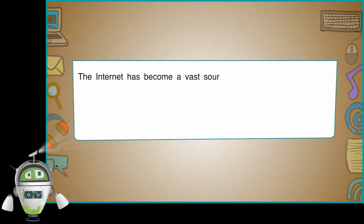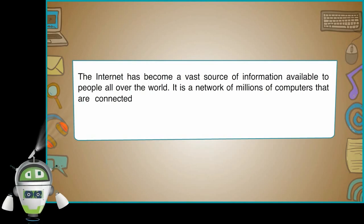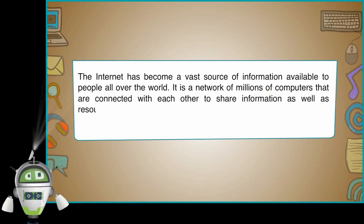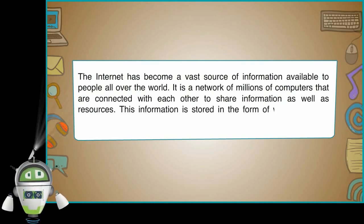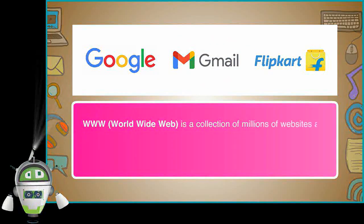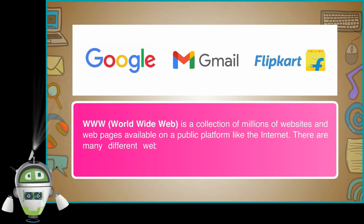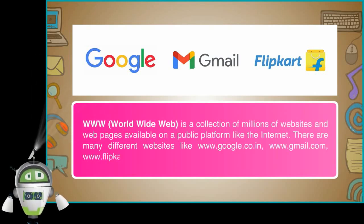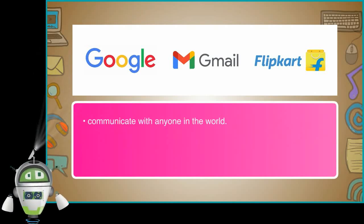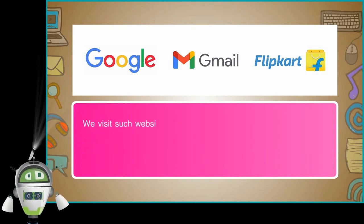The Internet has become a vast source of information available to people all over the world. It is a network of millions of computers that are connected with each other to share information as well as resources. This information is stored in the form of websites which consist of web pages. The World Wide Web is a collection of millions of websites and web pages available on a public platform like the Internet. There are many different websites like www.google.co.in, www.gmail.com, www.flipkart.com, using which we can communicate with anyone in the world, access information on any topic, do tasks like online shopping, playing games, watching videos, etc. We visit such websites quite often.